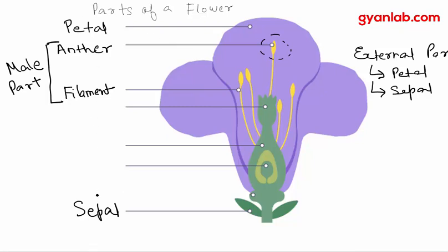So first we understood the external part, which comprises of the petal and the sepal. And now we've completed the male part of the flower, which is basically the anther or the pollen boxes, which is supported on the filament. Now you will see this central structure here.